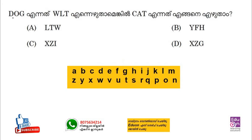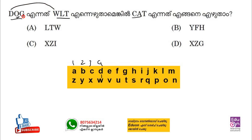The next question is coding-decoding: dog and WLT, cat — how to do coding-decoding. So we can do this. A, B, C, D, M, and then repeat. Dog → WLT, cat → ? D is the opposite. D, W, T, W — opposite pairs.